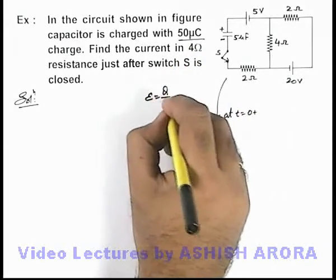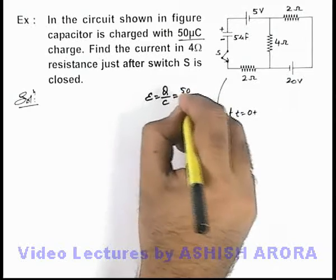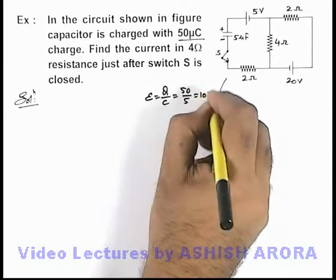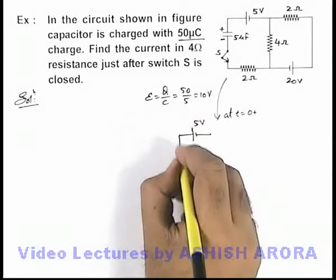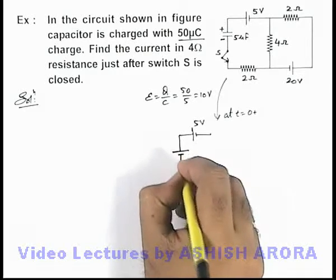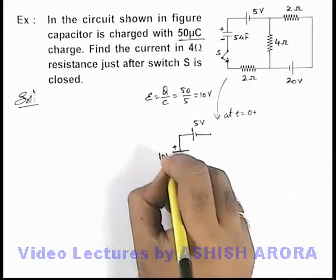So its EMF we can write as Q by C, so this'll be 50 by 5, that'll be 10 volt. So it'll behave as if a 10 volt battery is placed over here.